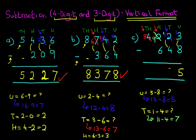Now the hundreds column — we've got nine minus six. Nine minus six is three. And lastly, we've got the thousands column. We've got three minus zero. Three minus zero is three. Therefore, our answer is 3,375. Just make sure you follow the same principles all the way through. So that is subtraction of a four-digit number and a three-digit number using the vertical format.